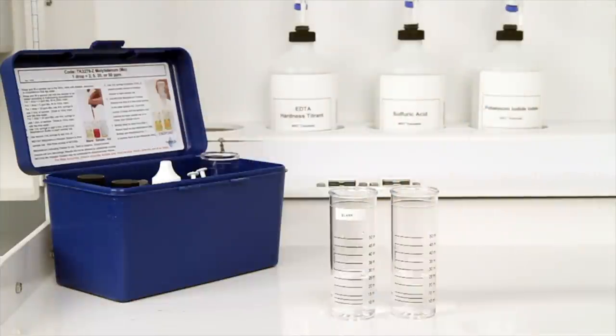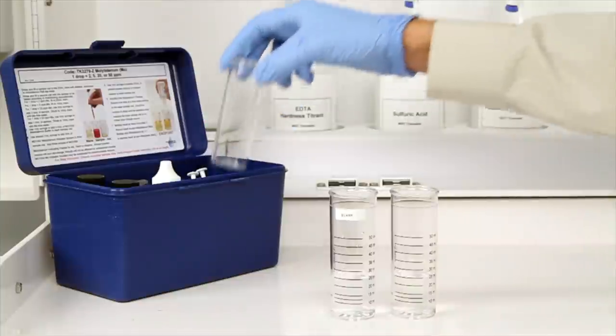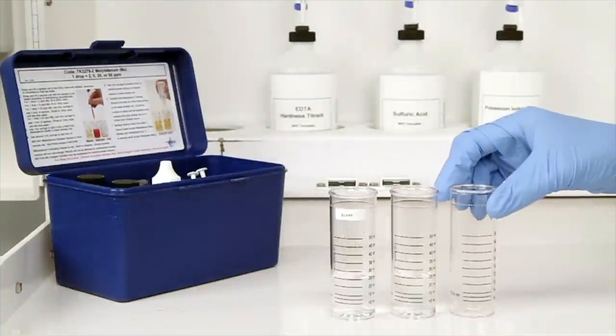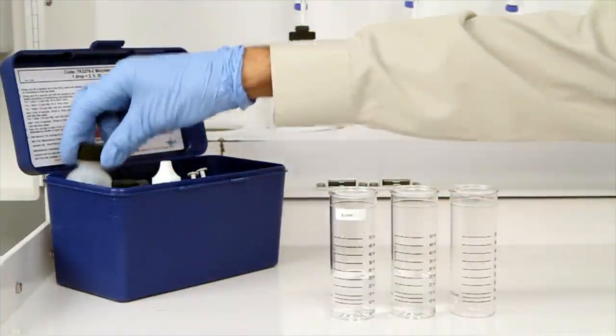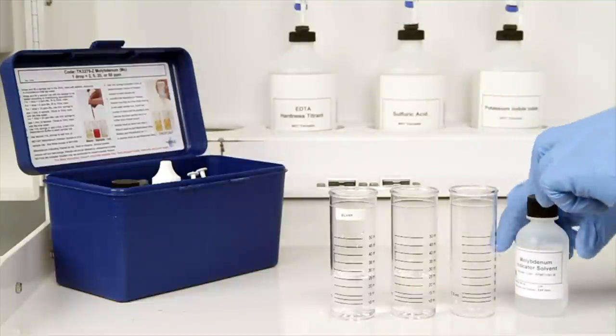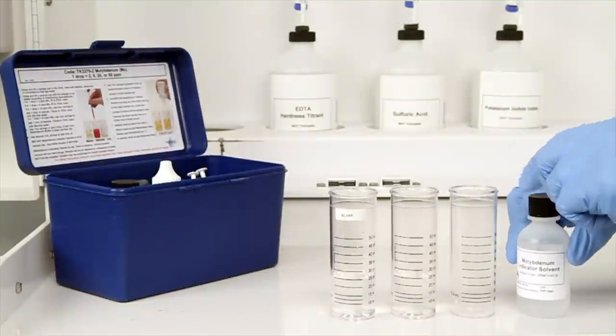The next step according to the endpoint ID procedure is to add two milliliters of molybdenum indicator solvent to a third vial. Use another one milliliter syringe included in your kit for this step.